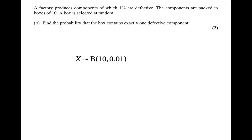In particular, X will have the binomial distribution with parameters 10 and 0.01 — 10 because that's the number of components, and 0.01 because that's the probability that a component is faulty. The question is asking us for the probability that X is equal to 1, and we'll have to calculate this using the formula rather than the tables, because the tables don't tell us anything about the case where the probability is 0.01.